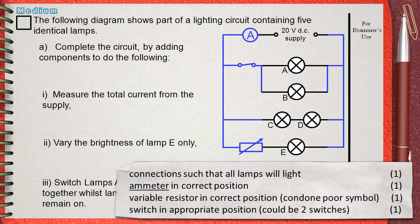Notice that the word ammeter is underlined. The underlined word means that this must be seen in the answer. This means that anything other than ammeter will be wrong.